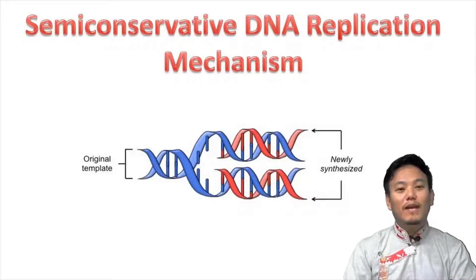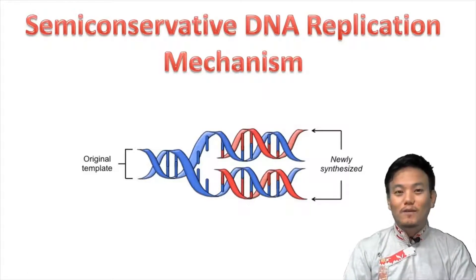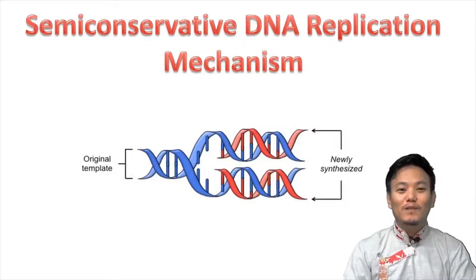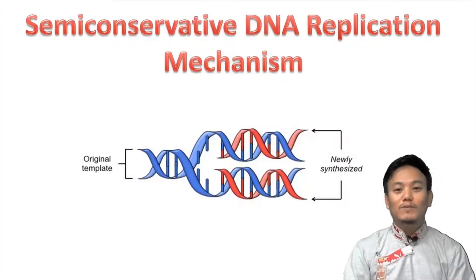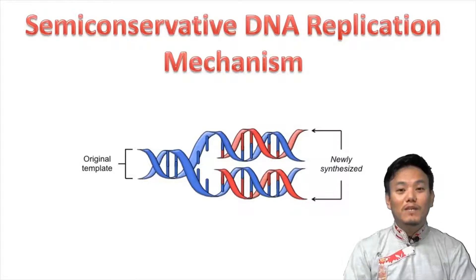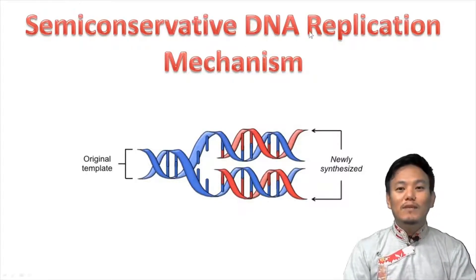The DNA replication mechanism is said to be semi-conservative — you have to remember this particular word. This semi-conservative DNA replication mechanism was proposed by Watson and Crick, the same two people who proposed the double helical model for DNA structure. When they proposed the DNA double helical model, they observed that adenine pairs with thymine and guanine pairs with cytosine, and that specific base pairing gave them the idea that the DNA replication mechanism will be semi-conservative in nature.